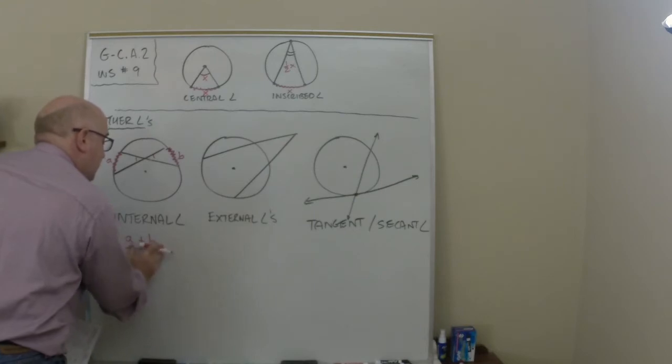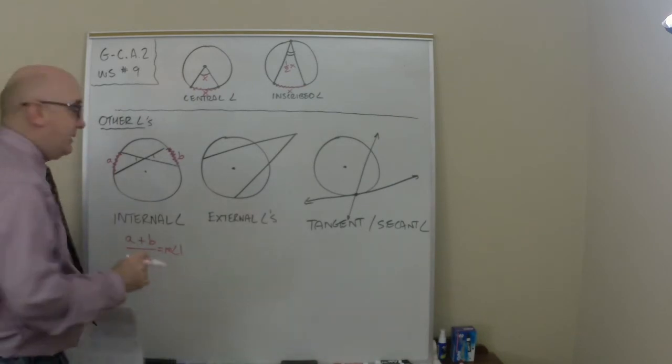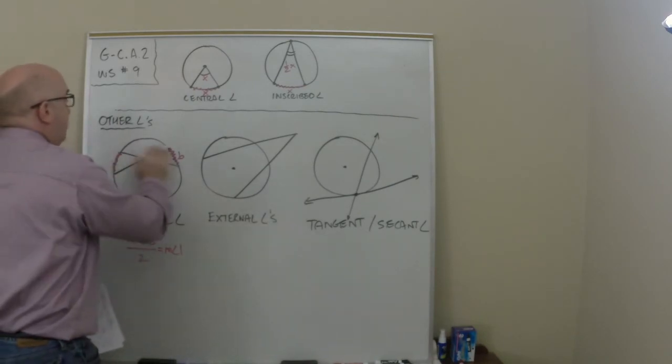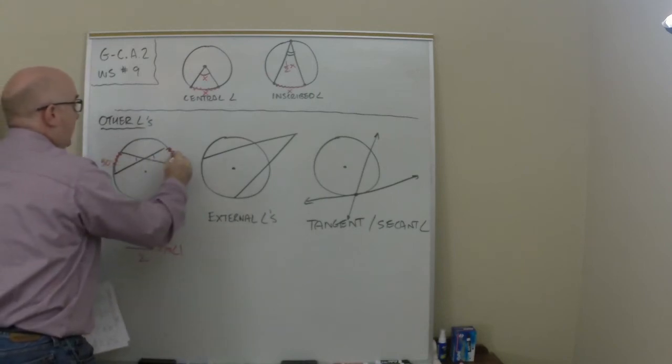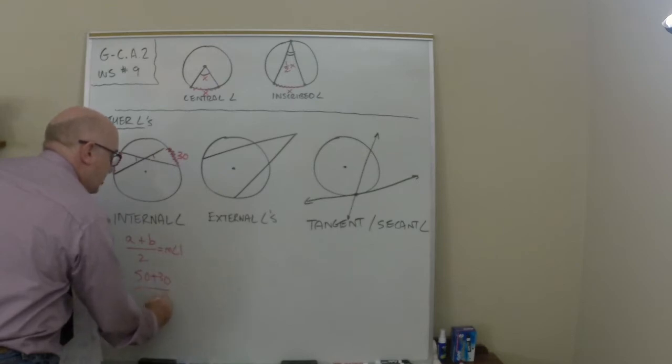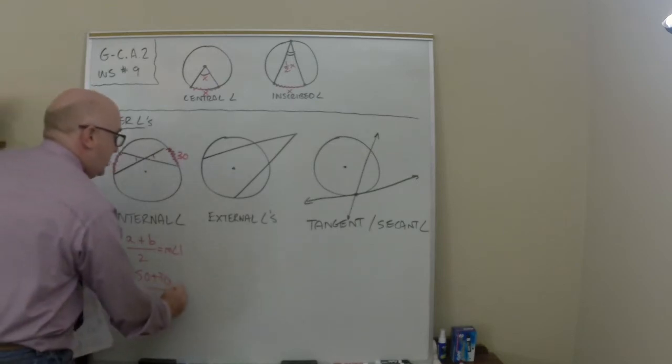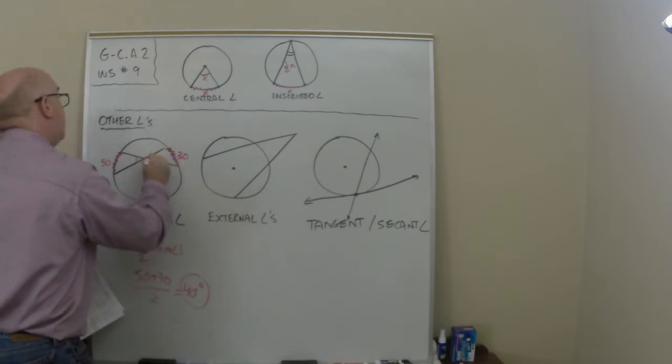Just to give us an actual example, let's say this was 50 and this was 30 here. We would take 50 and add it to 30 and divide by 2. Now 80 divided by 2 is 40, so this angle in here is 40, and of course so with this.